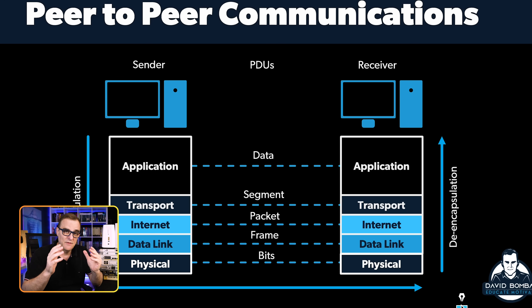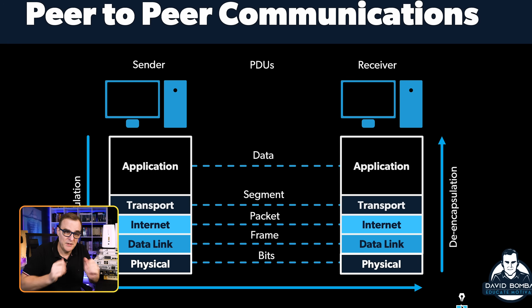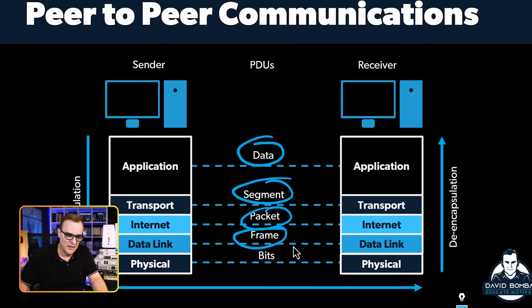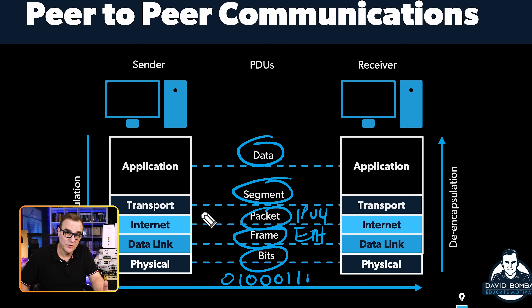A big chunk of data — say a 2 GB movie — is broken into segments at layer four and then into frames at layer two, depending on what the transmission media supports and what's negotiated with TCP. This is the concept of PDUs, or Protocol Data Units: at layer seven we have data; at layer four, segments; at layer three, packets; at layer two, frames; and at layer one, bits. At layer one we see zeros and ones; at layer two, Ethernet frames; at layer three, IPv4 or IPv6 packets; at layer four, TCP or UDP segments; and at layer seven, the actual application data.